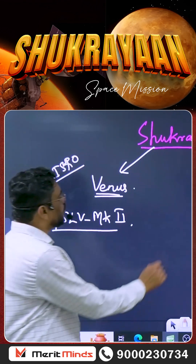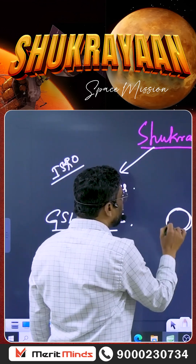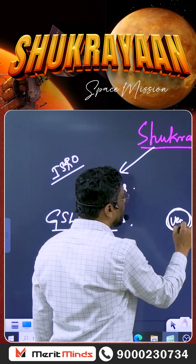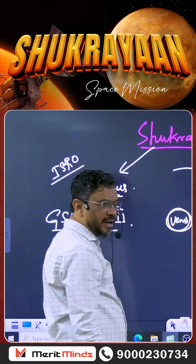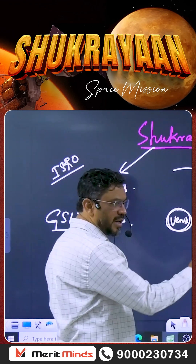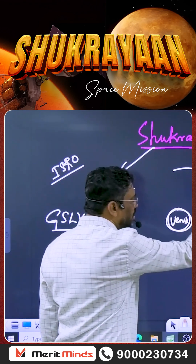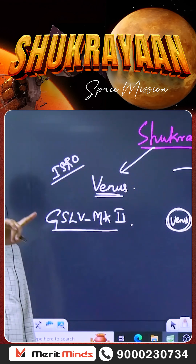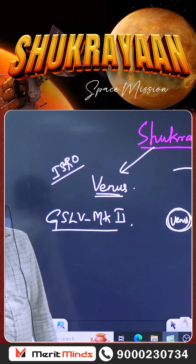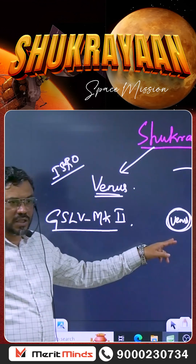This is the planet Venus. The Venus Orbiter Mission will orbit around the Venus planet — the orbiter is orbiting around Venus.